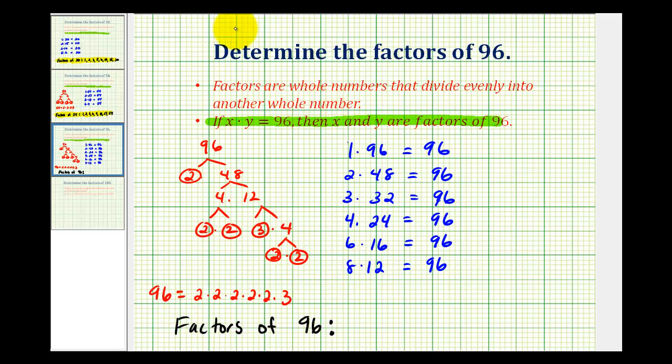Let's go ahead and list them. So the factors of 96 will be 1, 2, 3, 4, 6, 8, 12, 16, 24, 32, 48, and 96. And we should list them in order from least to greatest as I've done here.